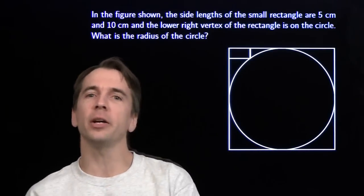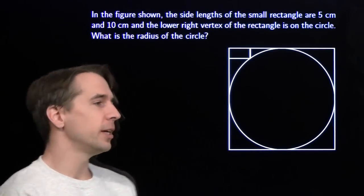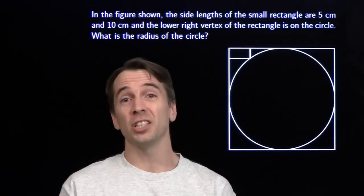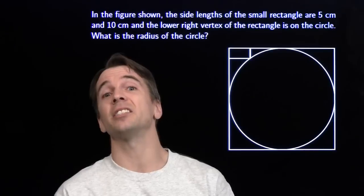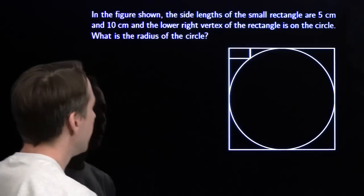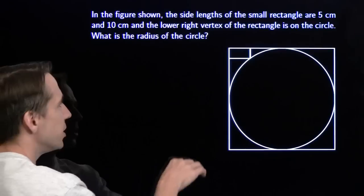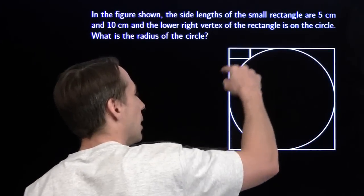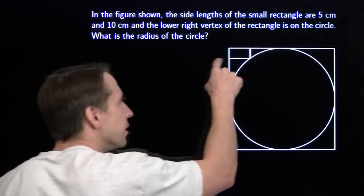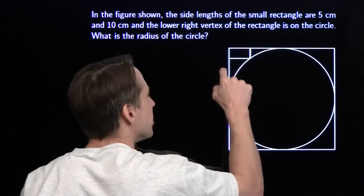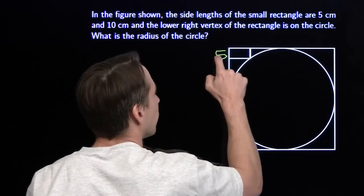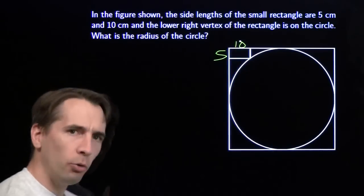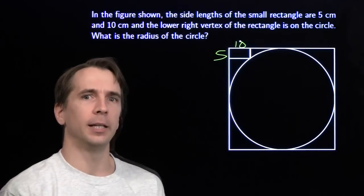We have some geometry. I've got my very own Mathemagician right here, Harvey. Harvey's a Mathemagician because he can make us see things that aren't even there. We have a square, we have a circle inscribed in the square, and they give us the dimensions of this little rectangle up here — it's 5 by 10 — and our goal is to find the radius.